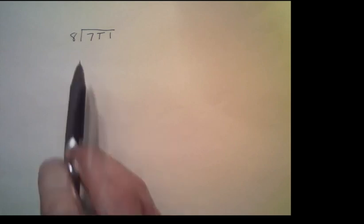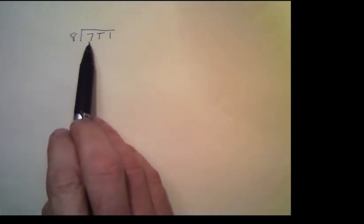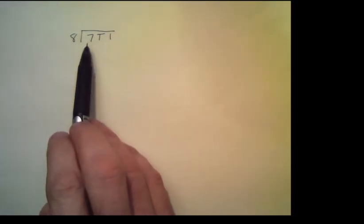We're going to use the partial quotients method. We're going to set it up sort of like we do with long division, except I'm not going to ask any of those silly questions like we do in long division, like how many times does 8 go into 7. That just doesn't make any sense.